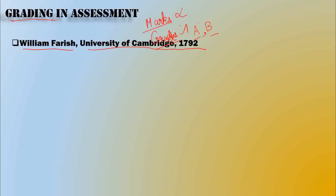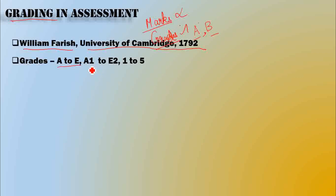If you look at different countries, grades use a grading scale to measure students' performance. In particular, grades are used from A to E. Grades are used in the grading system as A1, A2 through E2 — that is, A1, A2, B1, B2, and so on.